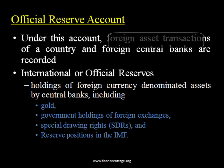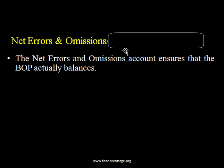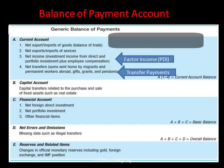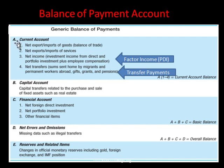Any changes due to this strategy are recorded in the official reserve account. The fourth account is the net errors and omissions account, which ensures that balance of payment actually balances. So there are four accounts — three major accounts and a fourth one just to maintain the balance of balance of payment. Let's take a look at the general structure of the balance of payment account.